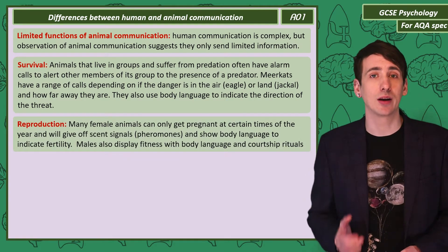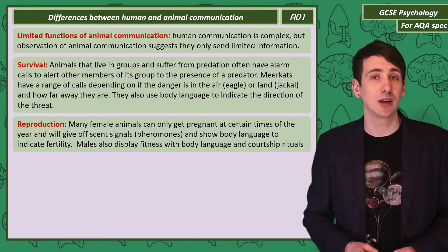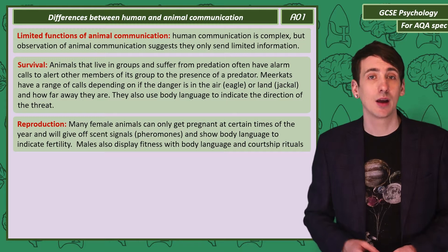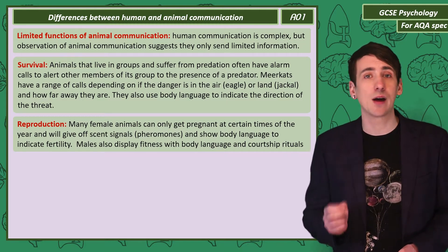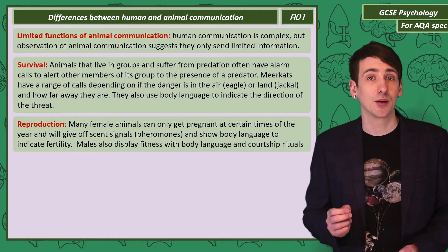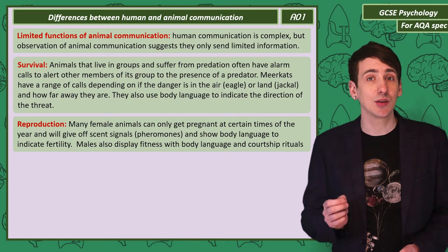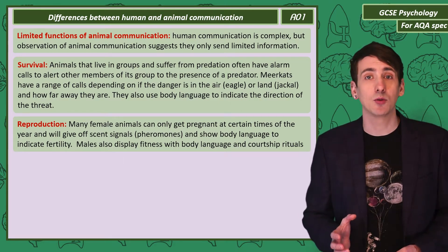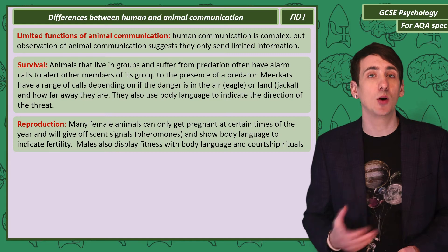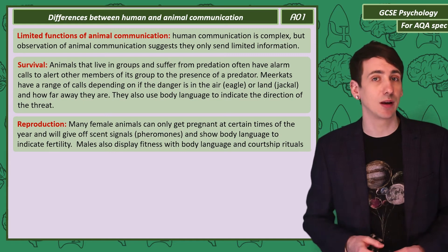Communicating reproduction is important as many female animals can only get pregnant at certain times of the year. This can be communicated to males by the use of pheromones — chemical signals that males can smell. Female animals can also use body language to display fertility.